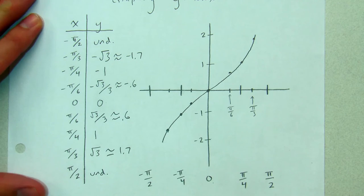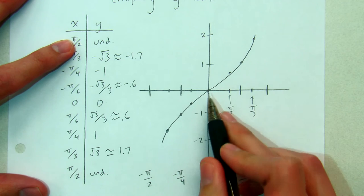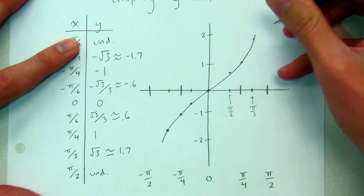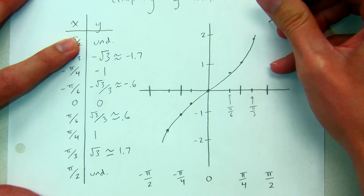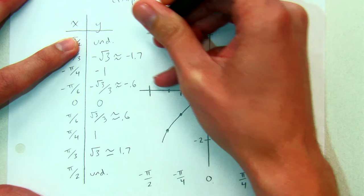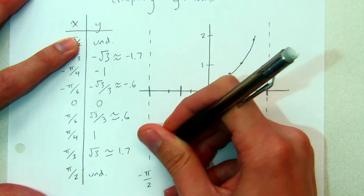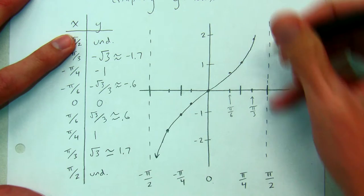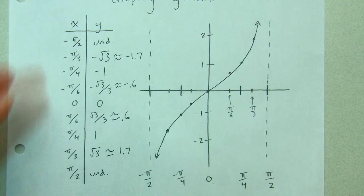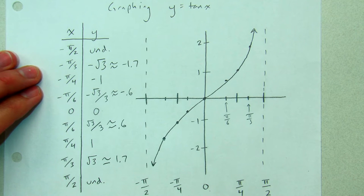Now let's see if we can figure out what's going on with these undefined points. Looking at the graph, the closer I get to pi over 2 and negative pi over 2, the more tangent goes up. What happens at pi over 2 where it's undefined is there's a vertical asymptote — a line that the graph gets closer and closer to without ever touching. This graph continues down towards that asymptote without ever touching it, and the other side continues up towards the asymptote without ever touching it. This is one period of y equals tangent x.